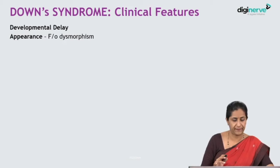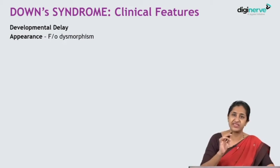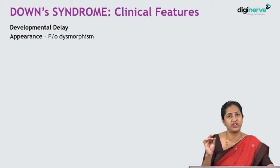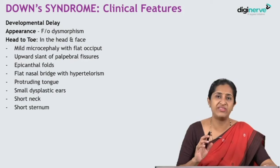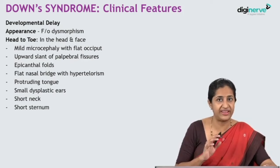Coming to the clinical features of Down syndrome: First, developmental delay with intellectual disability — this is the first and very important clinical feature. Children are usually psychomotor retarded. Coming to appearance, there are lots of dysmorphic features — very important and asked both in theory and practical exams. Finally, we will discuss the systemic features of Down syndrome.